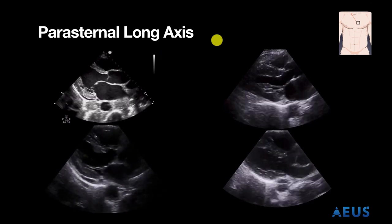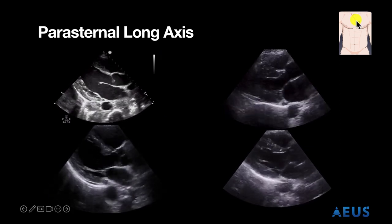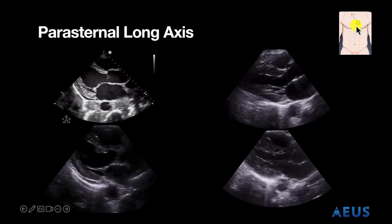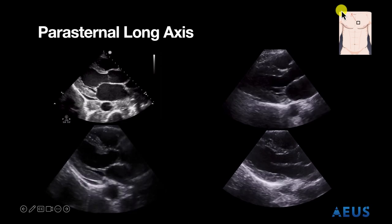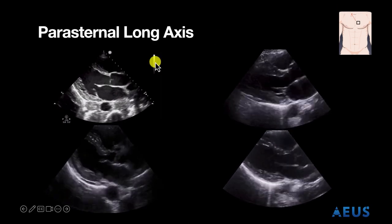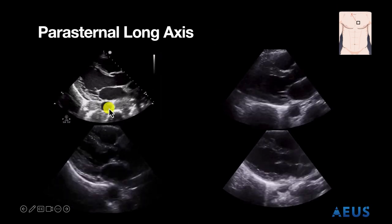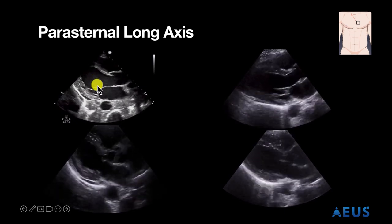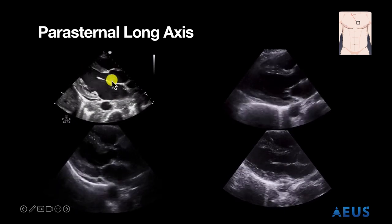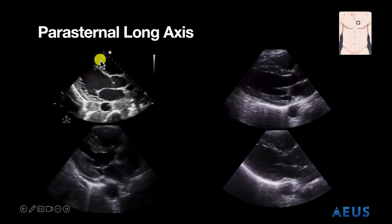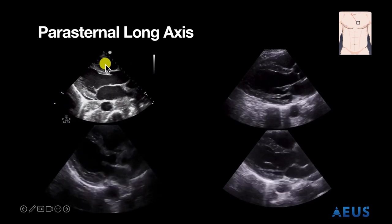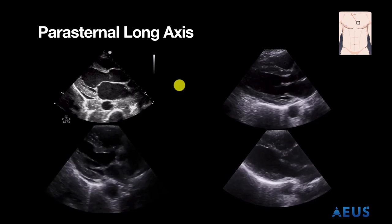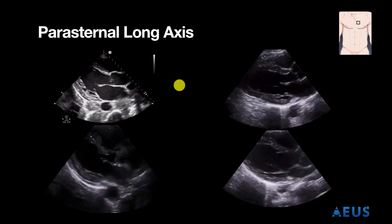Let's start with the parasternal long axis view. We have our graphic showing we're in the 4th or 5th intercostal space with the indicator pointing towards the right shoulder. Here we have our descending aorta, the left atrium, the mitral valve, the left ventricle, the aortic valve, the aortic outflow tract, and our right ventricular outflow tract. In regards to the 5Es, in this view we can look for effusion, ejection fraction, and exit.